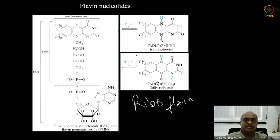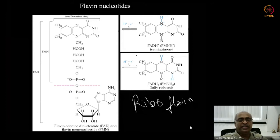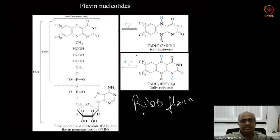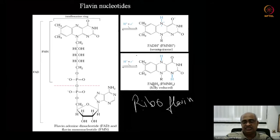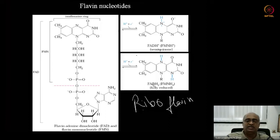Due to these features, flavin nucleotides participate in a higher diversity of reactions than NAD. NAD-using enzymes are large in number overall, but in terms of diversity, flavoproteins — proteins containing flavin nucleotides as cofactors — are more diverse. Another interesting feature is that the reduction potential of FAD and FMN varies depending on how the isoalloxazine ring is influenced by binding to the enzyme active site.